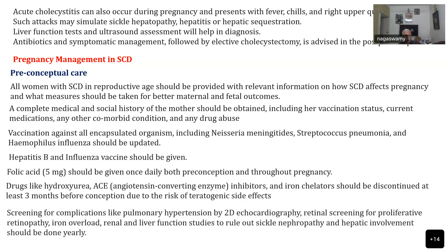Screening for complications like pulmonary hypertension is very important, assessed by 2D echocardiography. There can be microthrombi in the pulmonary circulation leading to pulmonary hypertension and right heart problems. Retinal screening for proliferative retinopathy, iron overload, and renal and liver disease should also be performed. In very severe cases of sickle cell disease, patients can develop sickle cell nephropathy or retinopathy, which may worsen the condition further.